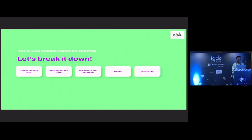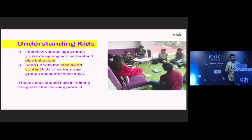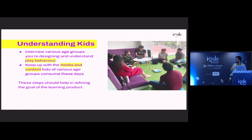And so let's break it down. We have five main chapters for this talk. Understanding kids, ideating on the form, and all of these chapters basically tie into each other. The meat of the conversation is always going to be about how we design the physical bit, because understanding kids is something a lot of companies do.